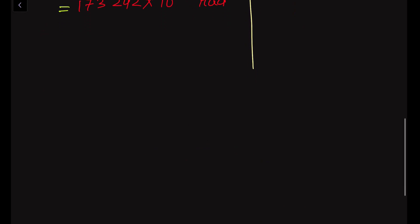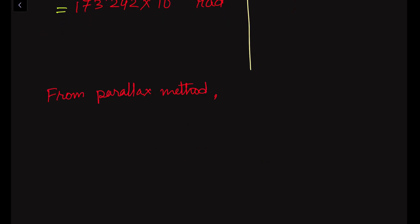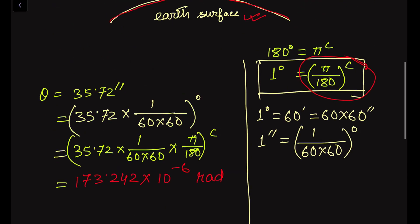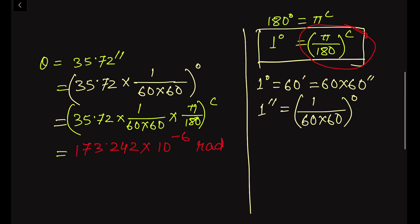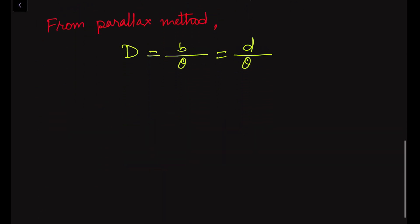From the parallax method, we have: D equals b divided by theta, where b is the base. Here b is nothing but small d, the diameter of Jupiter, divided by theta. So small d is the diameter of Jupiter, and we have to find out the value of small d.